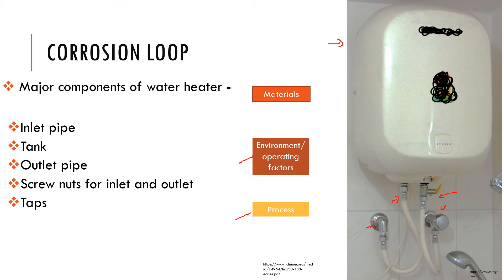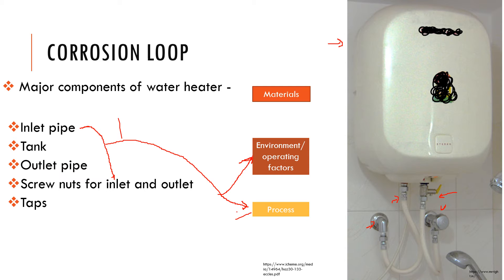Now if we try to apply the corrosion loop to this concept, the inlet pipe and the screws for the inlet would have similar functions. If we try to connect these and bring it to the process, they will have similar functions. They will also involve the same environment because this entire section takes in cold water. If we consider only materials, the materials are the same for screws and nuts at these points, and the taps would more or less be of a similar material.